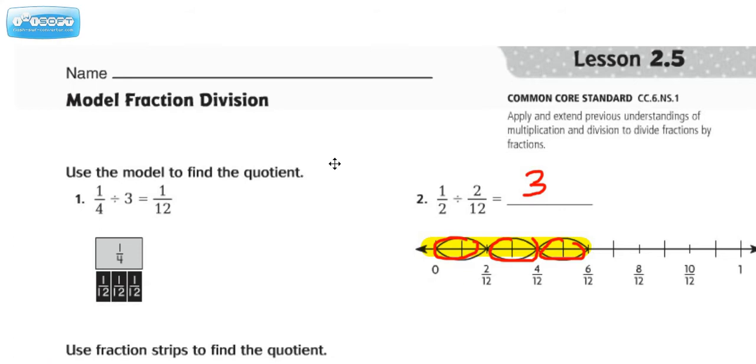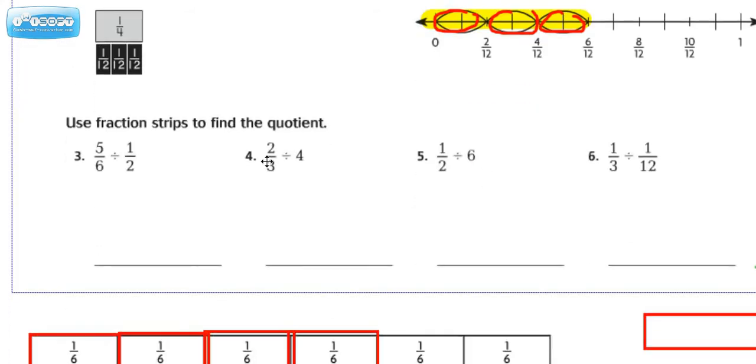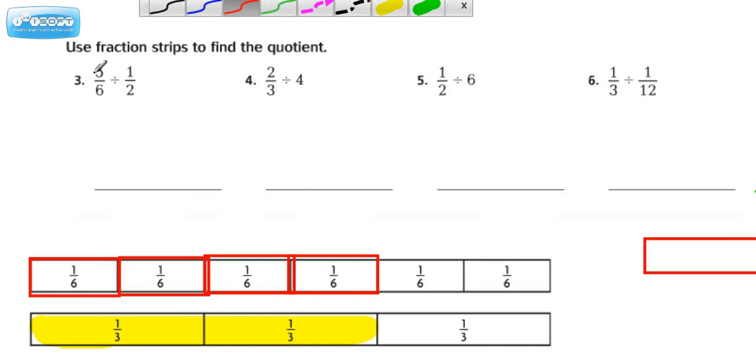Now we're going to take a look at some of the ones that are on the bottom here. We're going to look at number 4. There's other screencasts that I already have on there for some of the other ones, but let's look at number 4. Use fraction strips to find the quotient. And they're giving us 2 thirds divided by 4.